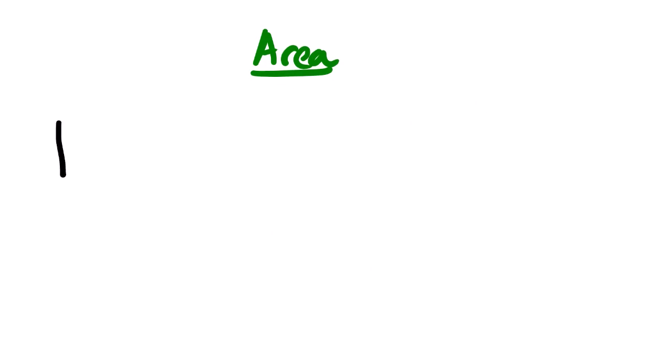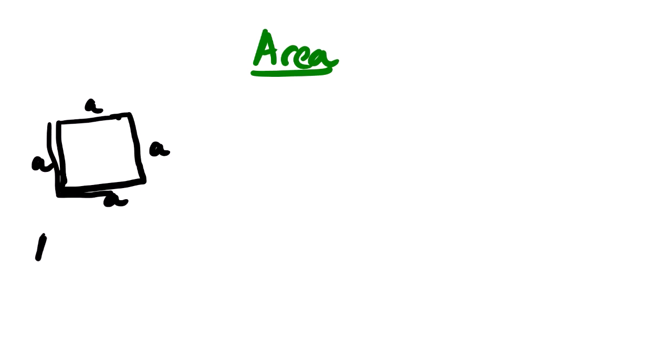Before we look at the actual question, remember that it is very important to review the equations for different shapes. Today we'll be looking at area, not perimeter. The area of a square — we know the properties of a square, it has all the same sides — so we simply take this part and multiply by this part. We have the area which is a multiplied by a, which gives us a².